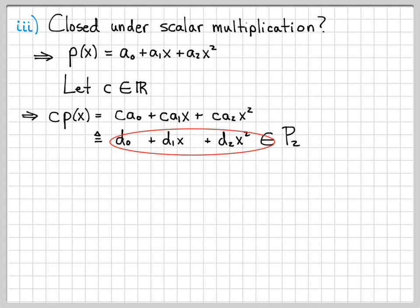So I've chosen an arbitrary starting vector, I chose an arbitrary constant, I formed the scalar multiplication, and I ended up with an element that is still in the set that I'm working with. So by definition, this is closed under scalar multiplication.